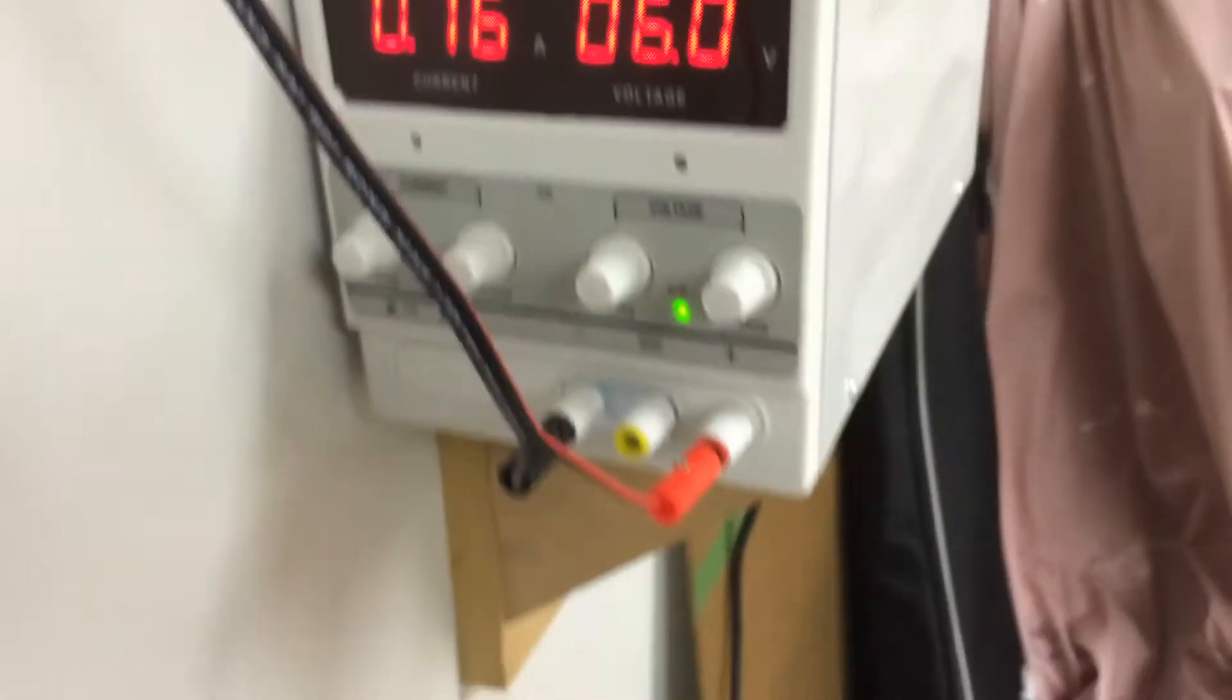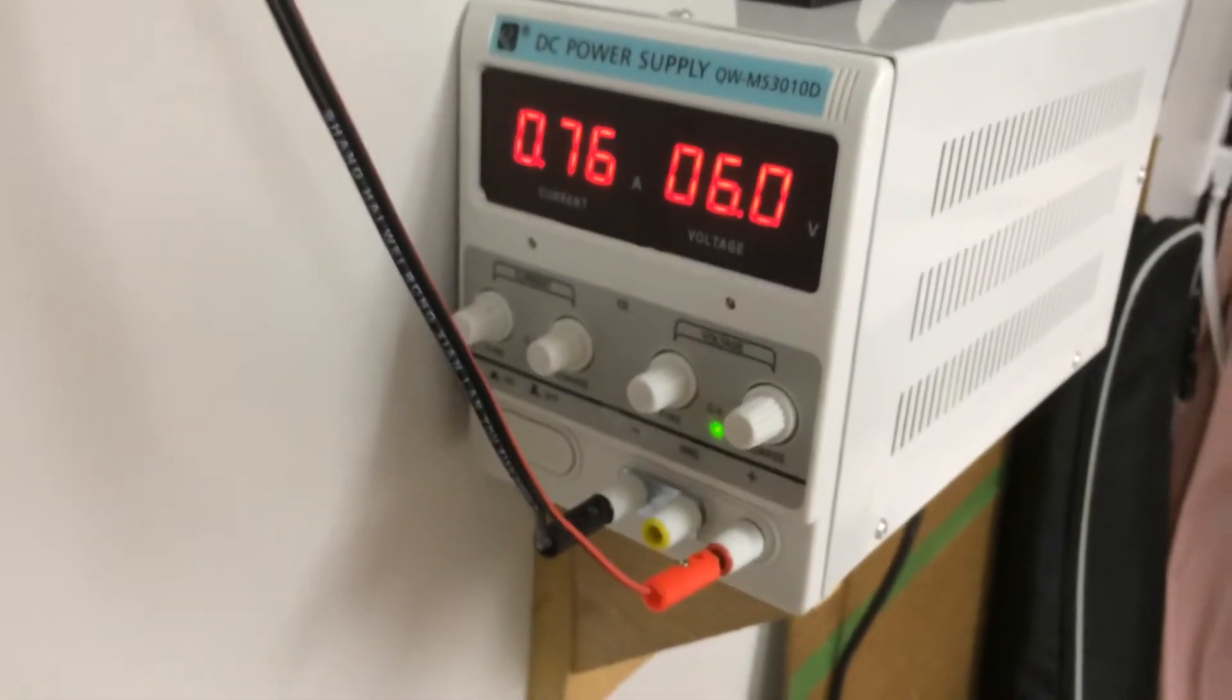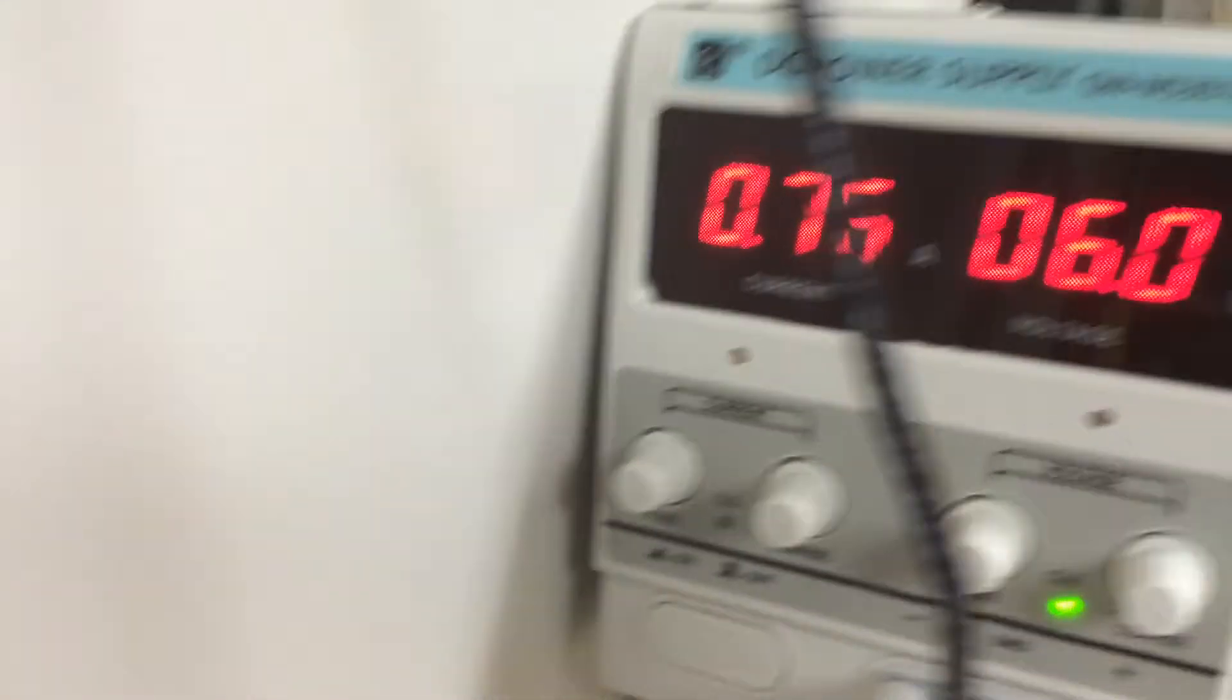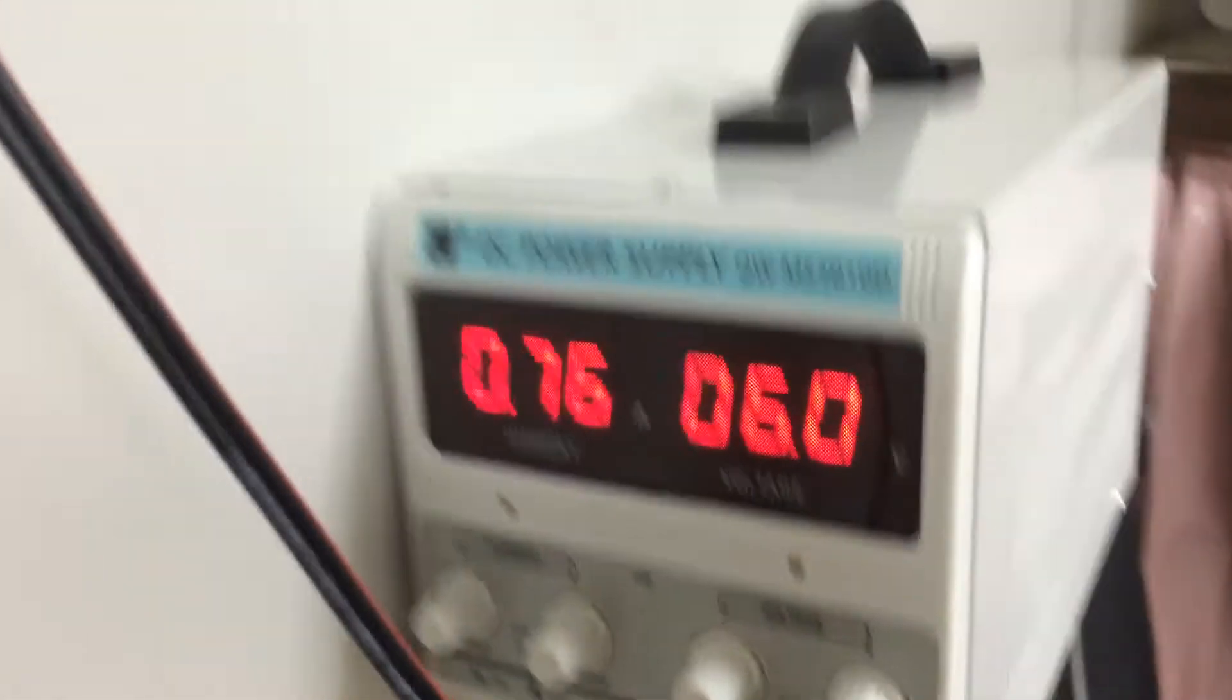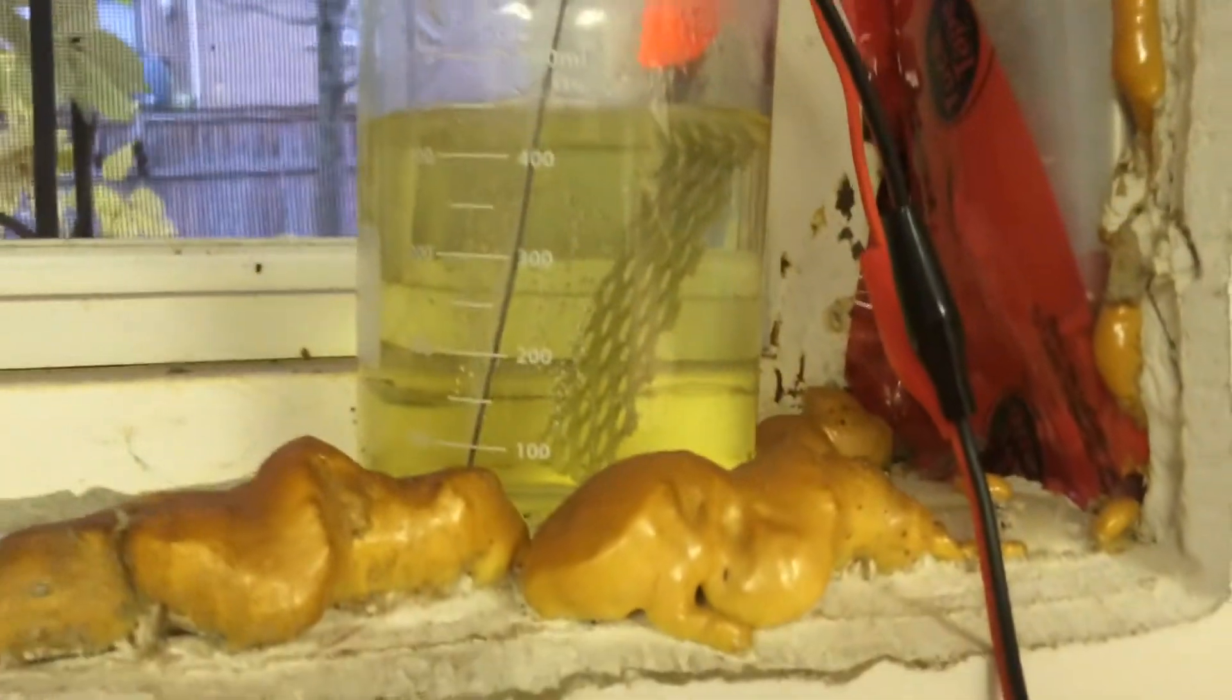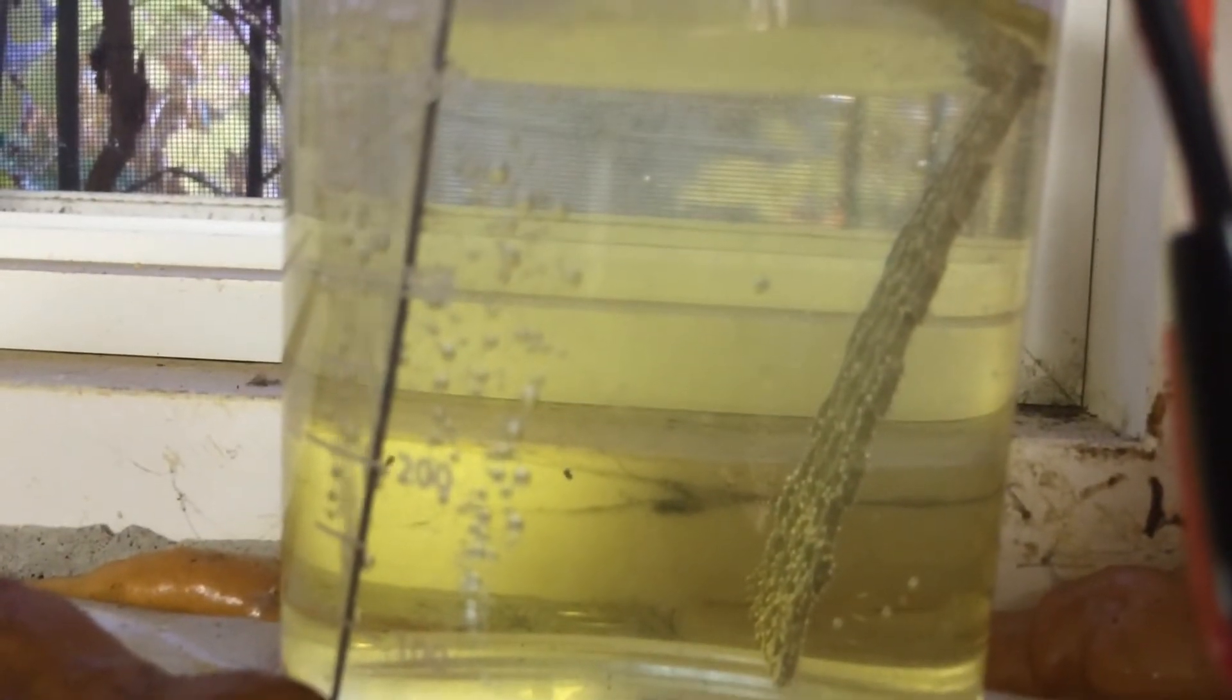As you can see here, I have the variable power supply going at about 0.8 amps and 6 volts, going into this solution here, which is the potassium chloride undergoing electrolysis to form potassium chlorate.